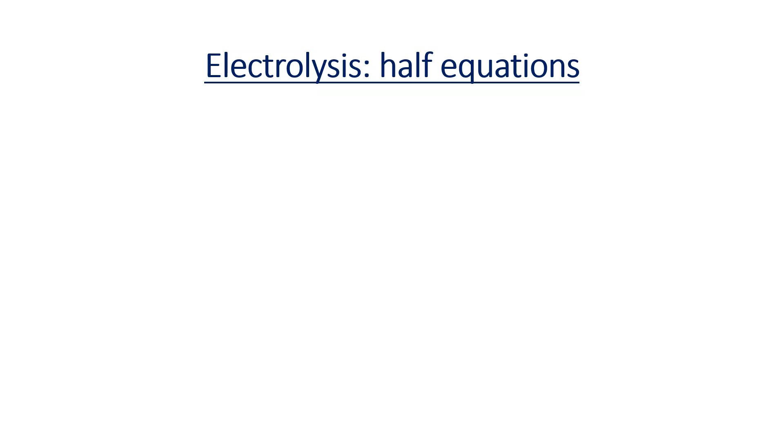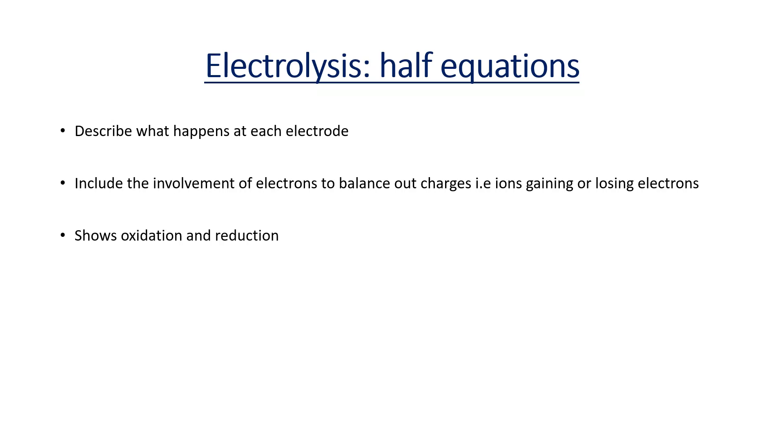An important part about electrolysis is knowing what is happening at each electrode. It's safe to assume that what happens at the negative electrode, the cathode, is different to what happens at the positive electrode or the anode. This could be seen and identified through the use of half equations which essentially describe the difference in what happens at each electrode. It involves the use of electrons in terms of balancing out charges. So the gain of electrons to the metal ion and the loss of electrons to the non-metal ion. This is of course the process of redox. So these half equations show oxidation and they show reduction.